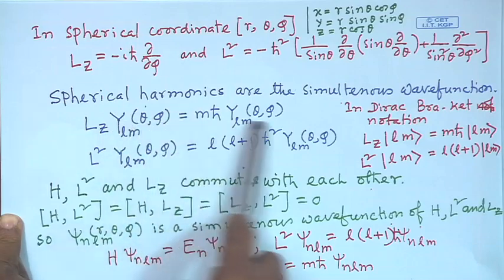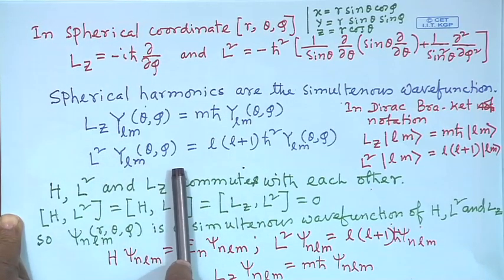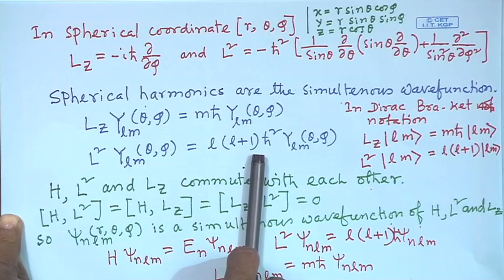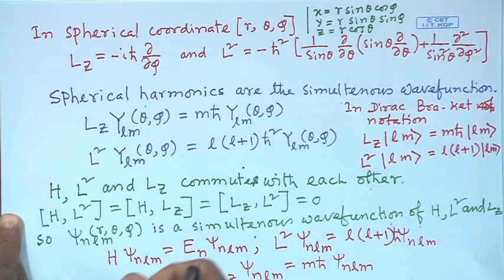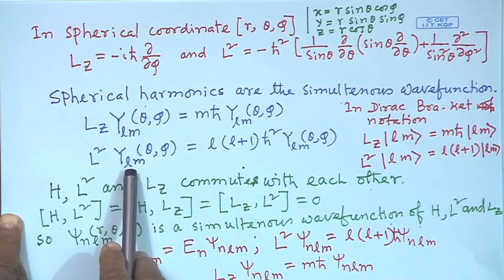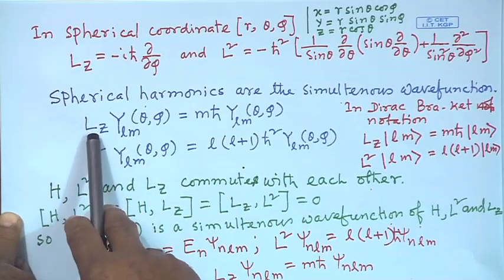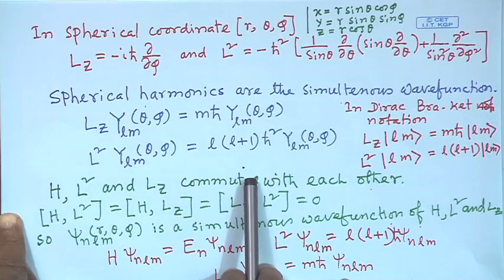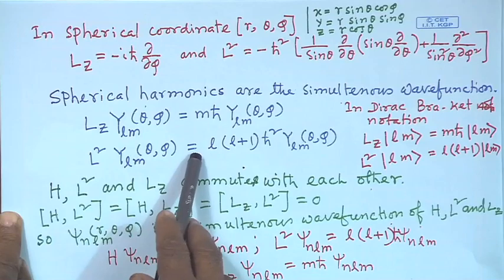The spherical harmonics Y_LM(θ,φ) are the eigenfunctions of both L_z and L². If we apply L_z on Y_LM, it follows the eigenvalue equation and gives the eigenvalue mℏ. Similarly, applying L² gives the eigenvalue ℓ(ℓ+1)ℏ². Since the spherical harmonics are part of ψ_nlm — which has the radial part R_nl and the angular part Y_LM — applying L_z and L² on ψ_nlm gives the same results. Therefore, L_z and L² have ψ_nlm as their simultaneous eigenfunction.